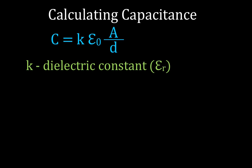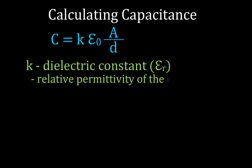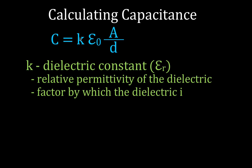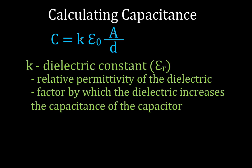K is the dielectric constant. In America we use a lowercase K; the symbol you might see in Europe or other places is epsilon-r. This is the dielectric constant — it is the relative permittivity of the dielectric. I think of it as how easily the dielectric can be polarized so that it can increase the capacitance, and also as a factor by which the dielectric increases the capacitance.